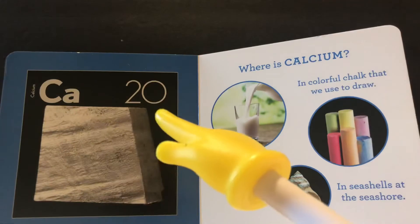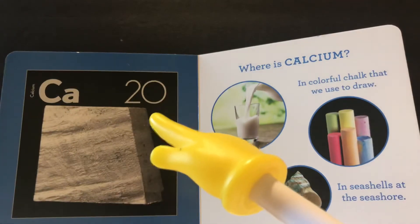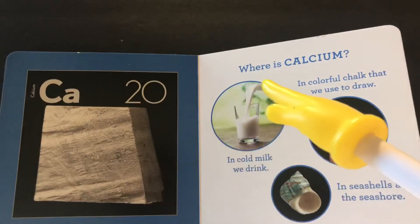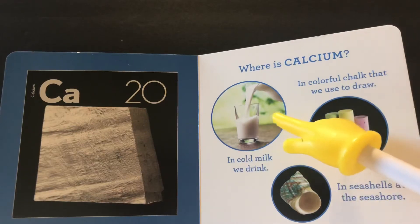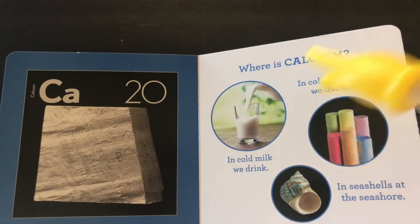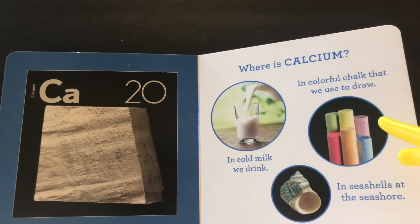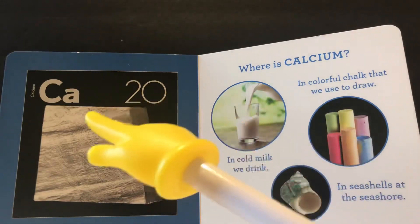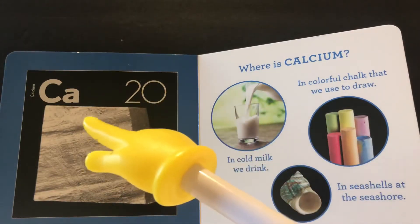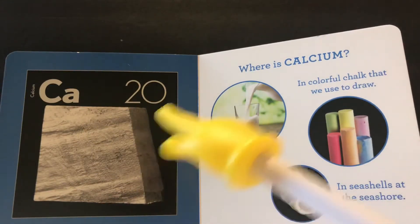CA-20. Calcium. Where is calcium? In cold milk we drink, in colorful chalk that we use to draw, in seashells at the seashore. CA-20. Calcium.